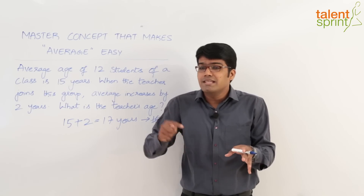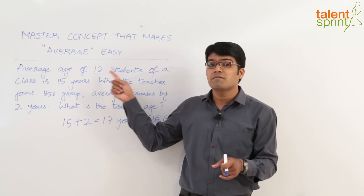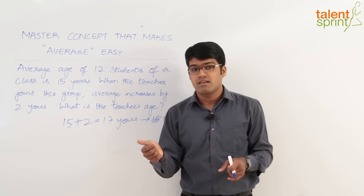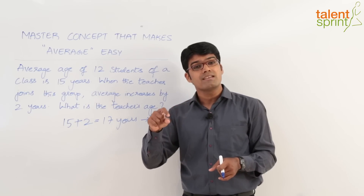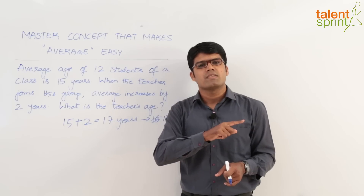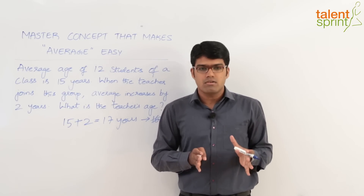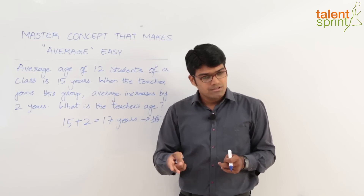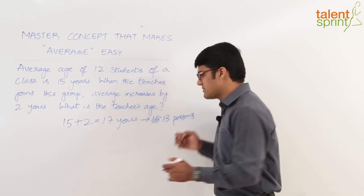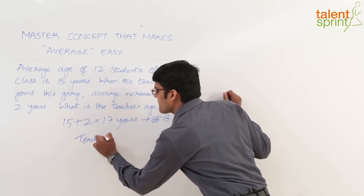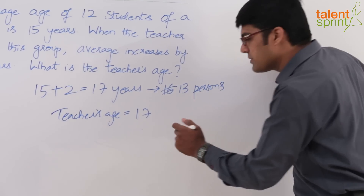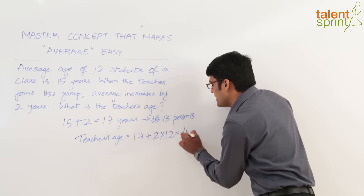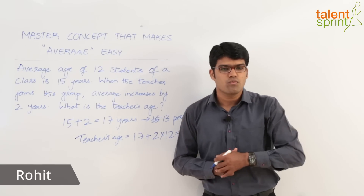Because the teacher joined the group, each person's age increased by 2 years — earlier all 12 students were 15, now they are 17. This increment of 2 years for each student is contributed by the teacher. So the teacher's age equals 17 years (which the teacher already possesses) plus 2 years given to each of the 12 students: 2 × 12 = 24. Therefore, 24 + 17 = 41. The teacher's age is 41 years.